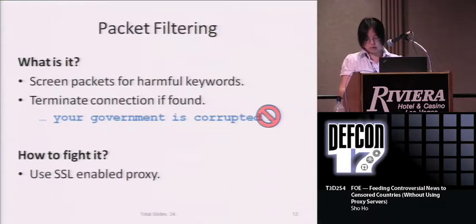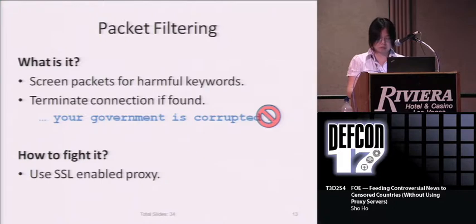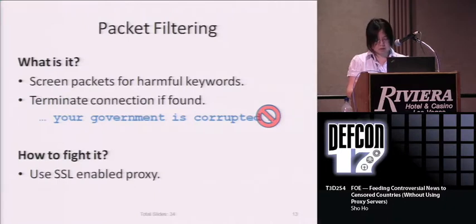This next one is packet filtering. The way it works is by screening packets for harmful keywords. And if they find them, the censor will terminate the connection between the user and the website. To circumvent this type of blocking, we can tell the user to use an SSL-enabled proxy. SSL will encrypt the data, which makes it difficult for censors to perform real-time packet filtering.